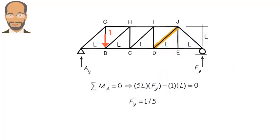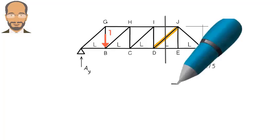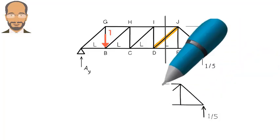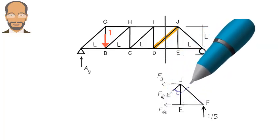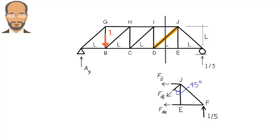Then we can cut the truss vertically, like this. Now we draw the free body diagram for the right segment of the truss. Since we are only looking for FDJ, we simply set the sum of the forces in the Y direction to zero.